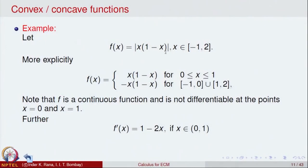A similar calculation shows that the function is also not differentiable at x = 1. So this function, |x|(1 − x) on [−1, 2], is continuous everywhere but not differentiable at x = 0 and x = 1.